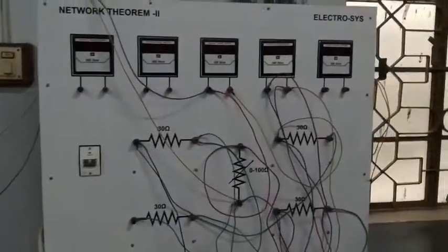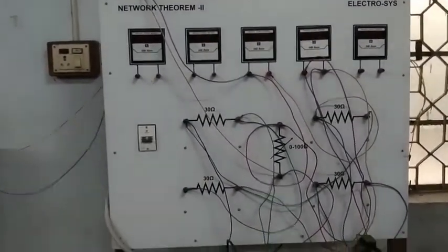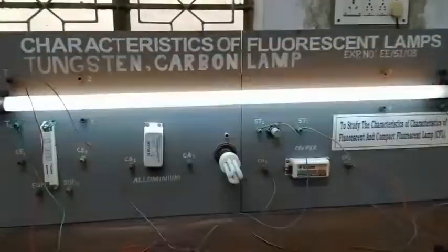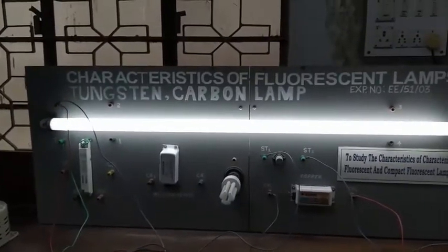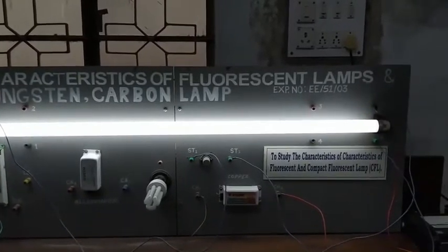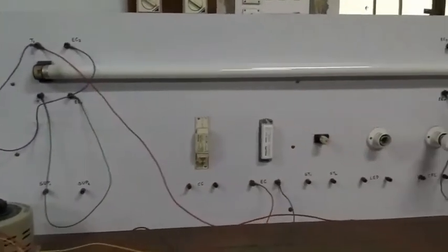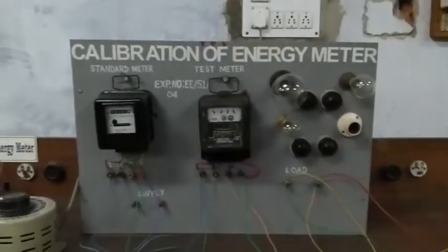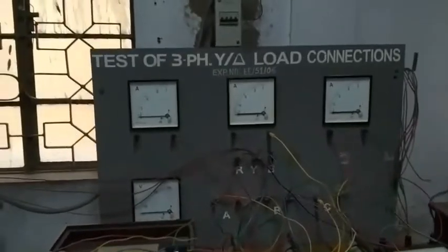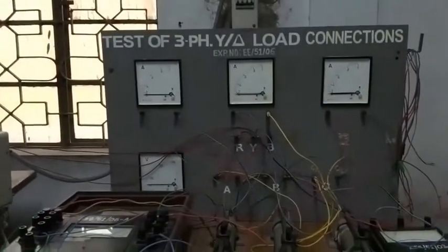Another setup for this. Again, this is fluorescent lamp. Same setup for this. And here, calibration of energy meter. This experimental table for three-phase star delta connected load.